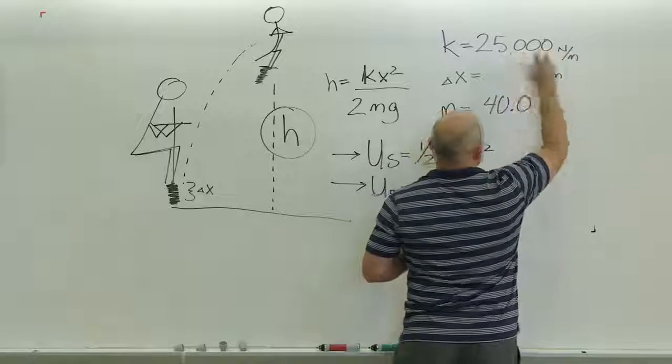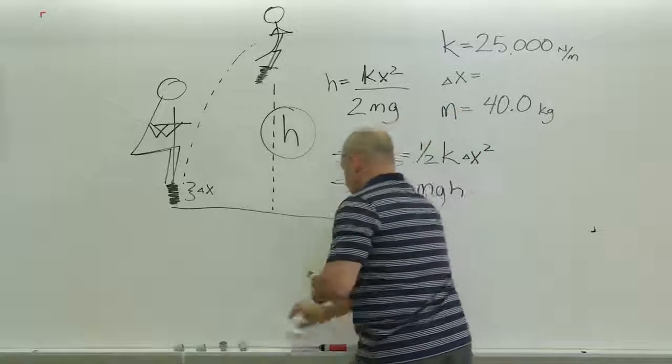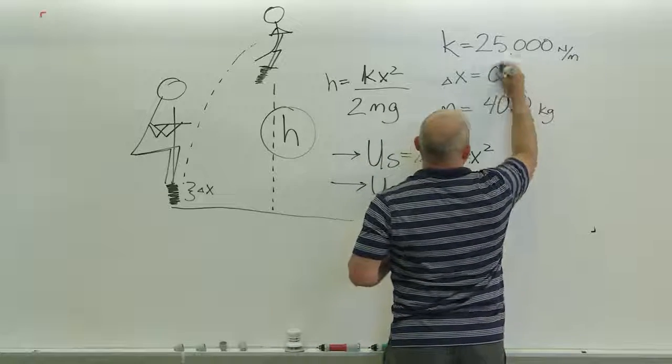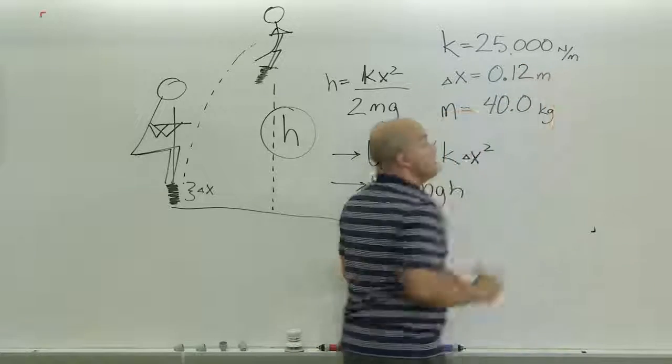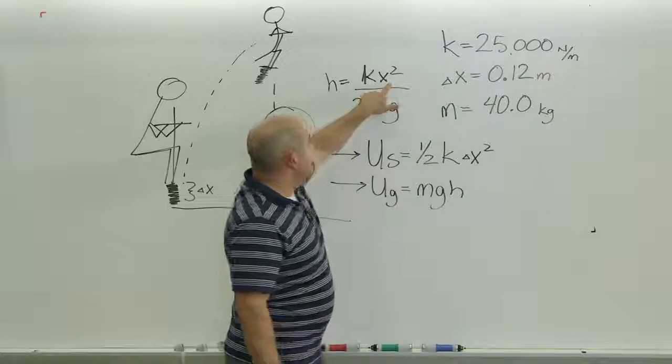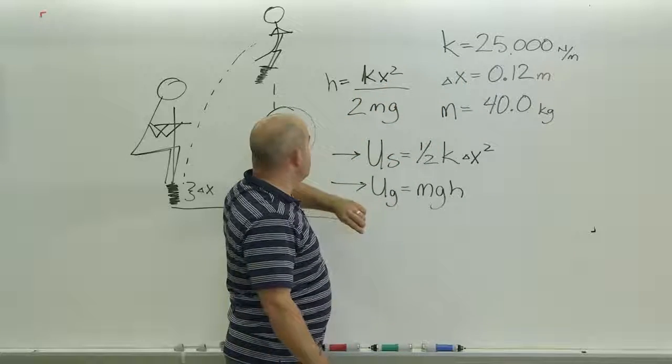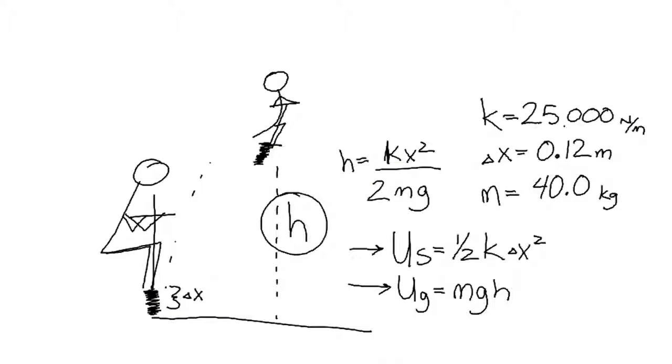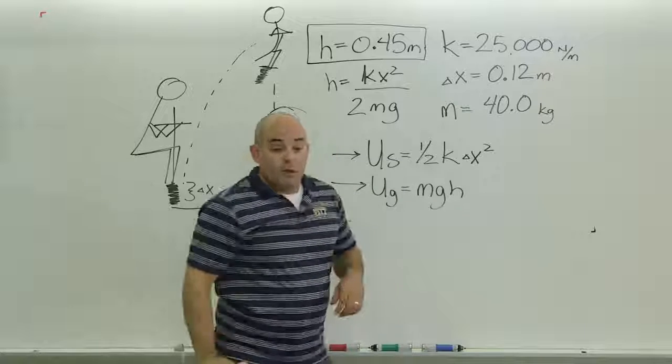Now we're all set to plug into the calculator. We have to plug in 0.12 and square that, and when you do, it turns out this height h is 0.45 meters.